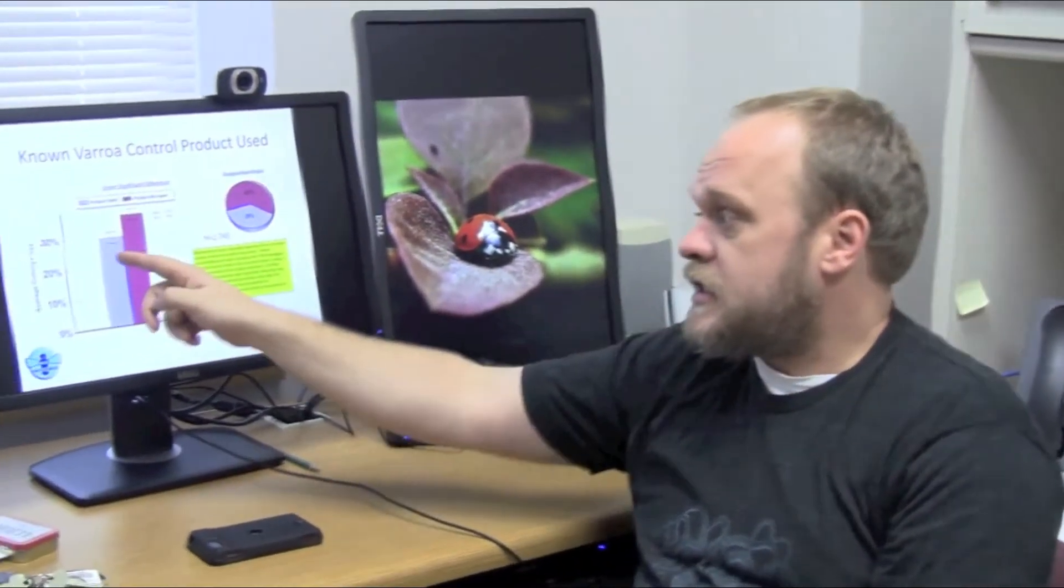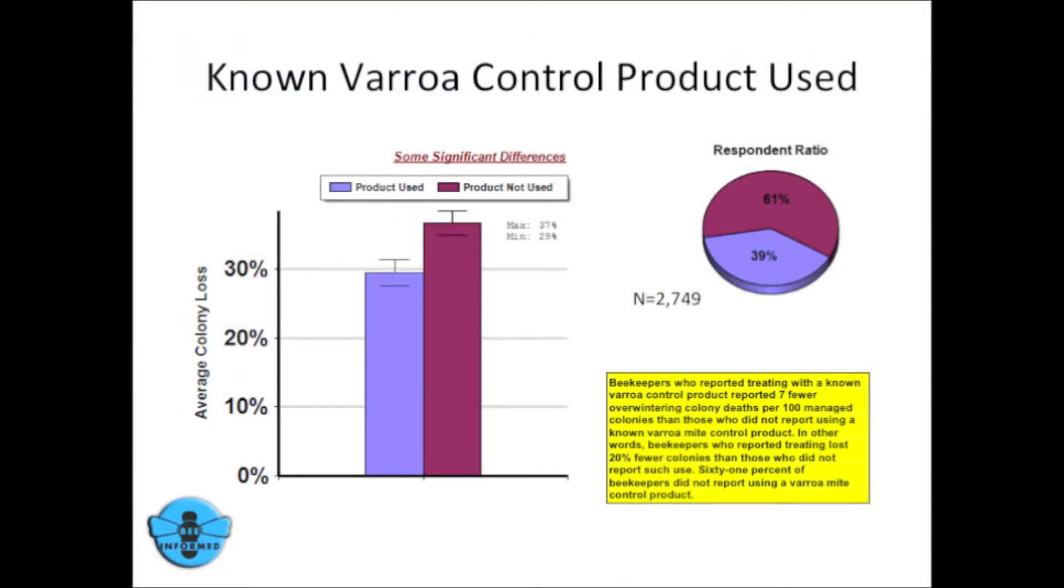If you do look at the two averages and you find that they are different, it doesn't necessarily tell you anything about why they're different, although it's suggestive. So in this case it suggests that treating with a known Varroa mite control product is helping keep colonies alive. But of course it's probably not the product itself that's keeping the hive alive. It's probably a consequence of it controlling Varroa mites.